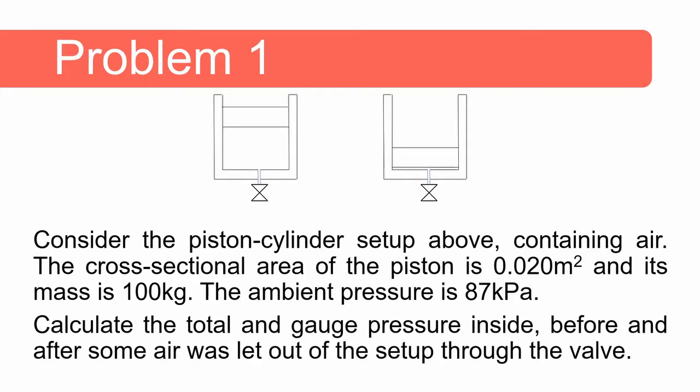So here is a problem that we can consider. We have two cylinders with a piston head at the top and there's a piston head again with a little valve here at the bottom. For the first instance this piston cylinder is containing air and the cross-sectional area of the piston is 0.02 m² and the mass of the piston head is 100 kg and the ambient pressure outside the cylinder is 87 kilopascal. Calculate the total and gauge pressure inside the cylinder before and after some air was let out of the setup through the valve. You can pause this video and have a go and then we will discuss it.